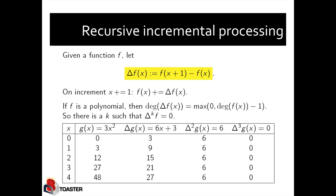If f is a polynomial, we can define a degree, and the degree of delta f of x is known to be lower by 1 than the degree of f of x, unless the degree becomes 0. So the degree of delta f of x is the maximum of 0 and the degree of f of x minus 1. There is a case such that delta to the k — the kth delta of f — is 0, meaning we take the delta of the delta of the delta repeatedly of f.